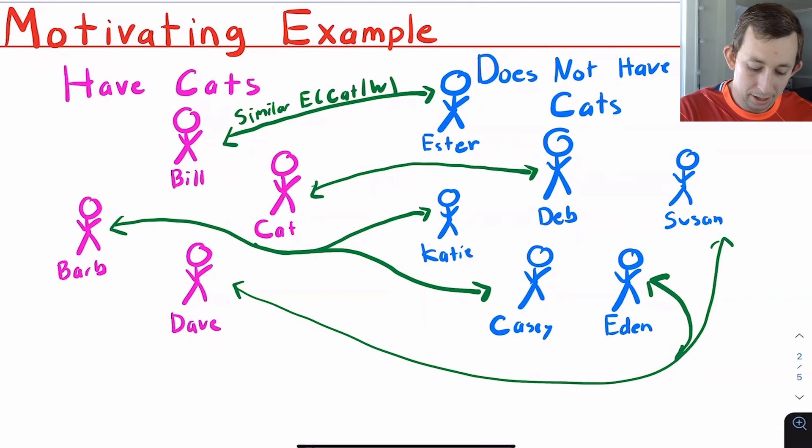So we say great, Bill and Esther, you are super comparable. We think you each have the same likelihood of having a cat, but Bill has a cat and Esther does not have a cat. So when we're trying to make our best guess as to what Bill's stress level would have been had he not had a cat, we're just going to use Esther's stress level because Esther and Bill seem super comparable.